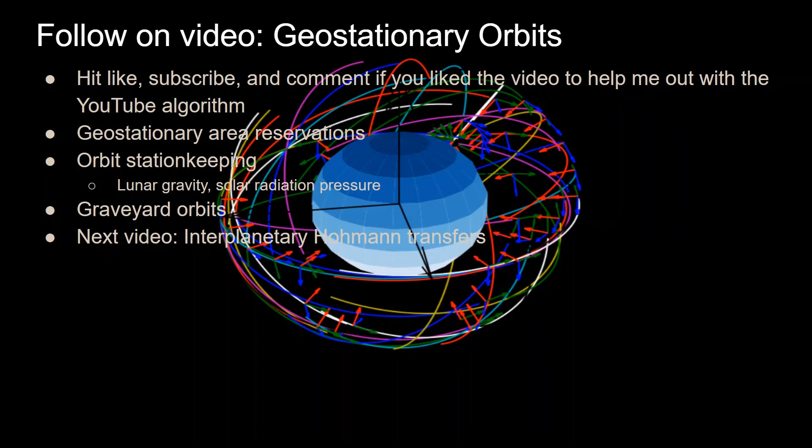I'll also go over orbit station keeping, keeping track of that lunar gravity and solar radiation pressure, and how that is making you deviate from where you want to be. And also graveyard orbits, because these satellites eventually go to the end of their life, and they have to be disposed of, where disposed of just means they get put in a stable orbit that will never hit another satellite, which is another very interesting thing about how these satellites are handled.